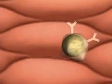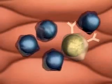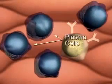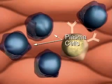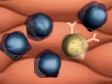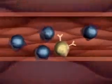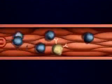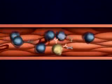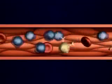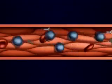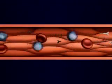Some continue to divide, producing many plasma cells. Plasma cells secrete large quantities of antibodies into the bloodstream. This division of only the appropriate B cells is called clonal selection.